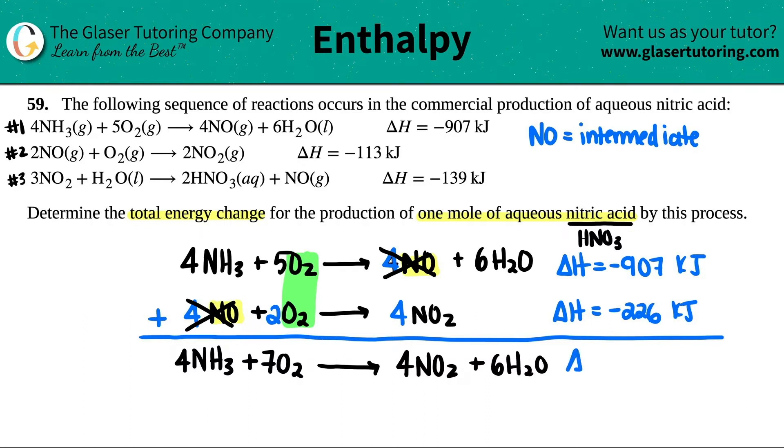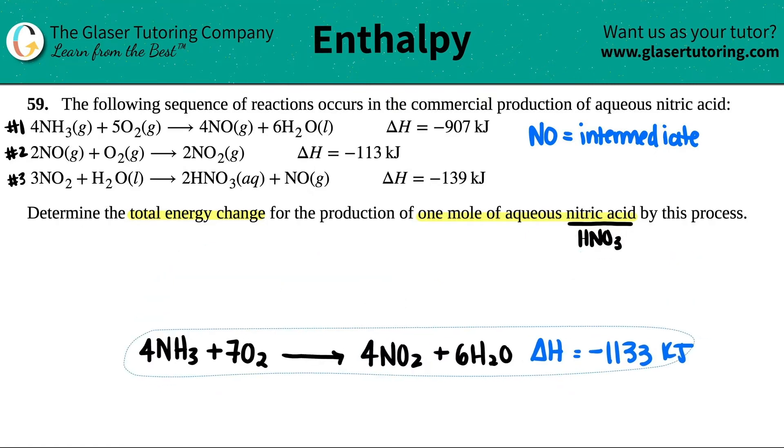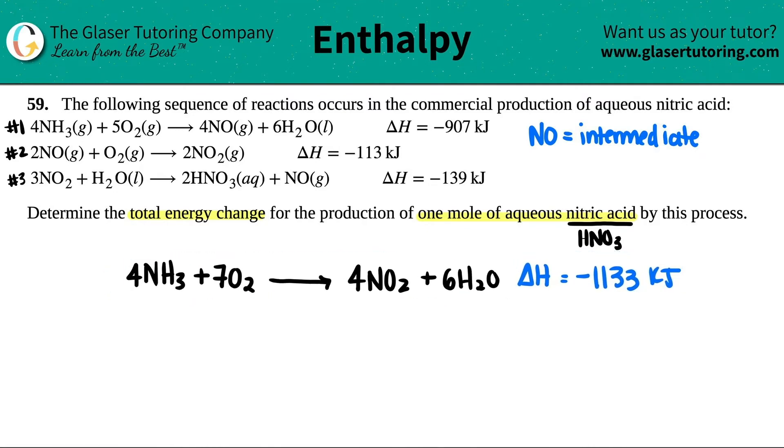And this will all yield four NO2 and six H2O. Now we have a new delta H value. Just like we added these up, you got to add the delta Hs up. Negative 907 plus negative 226. I get a negative 1133 kilojoules. And that's where we stand right now. This is the new formula that we're going to be working with.